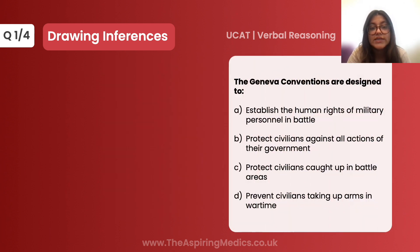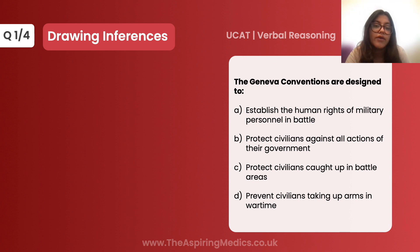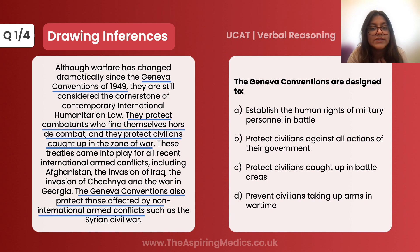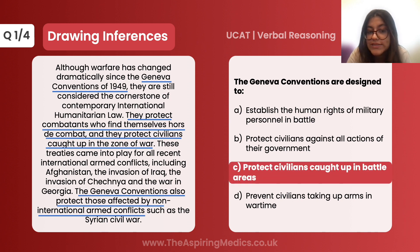The first question is: the Geneva Conventions are designed to — and you have four options. Looking at the second underlined sentence, they protect civilians caught up in the zone of war. So the correct answer is option C.